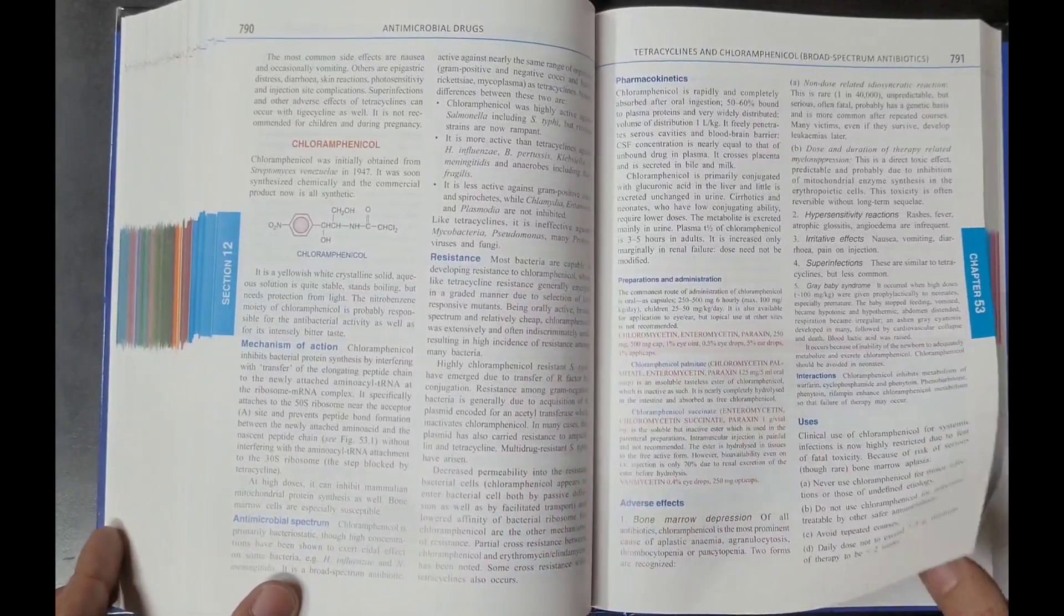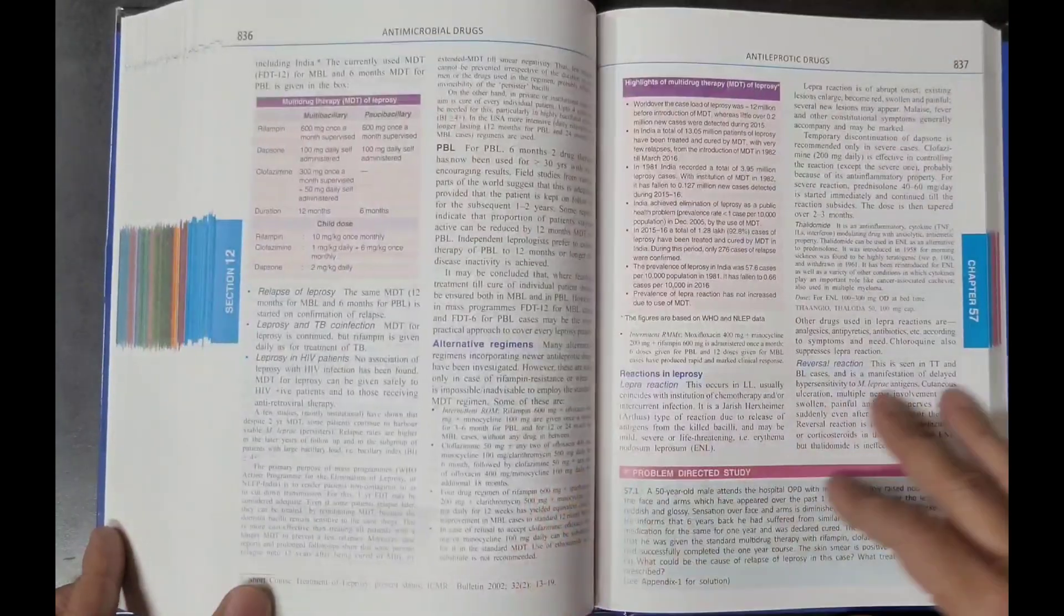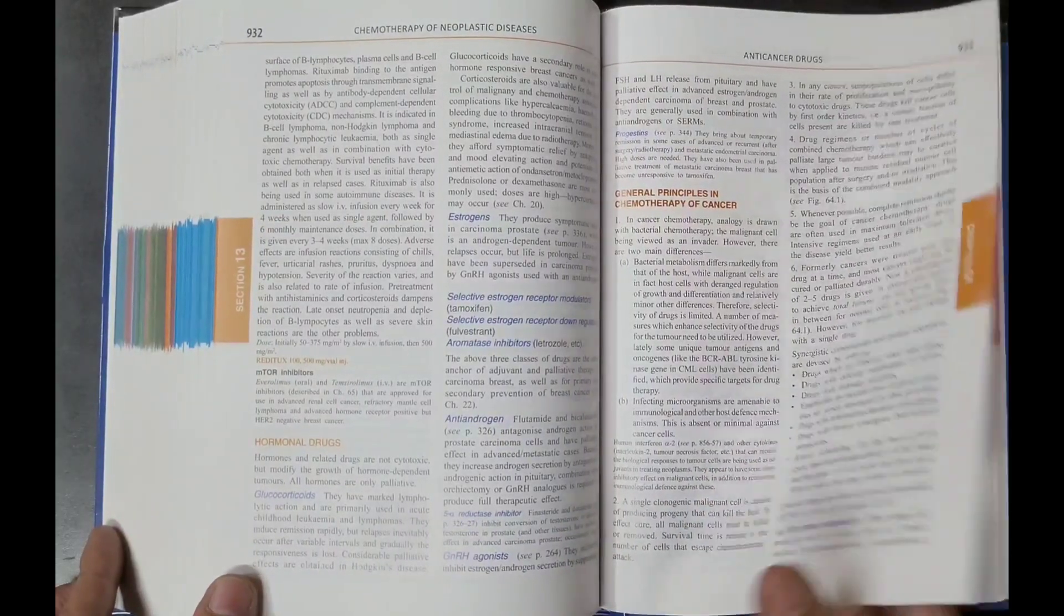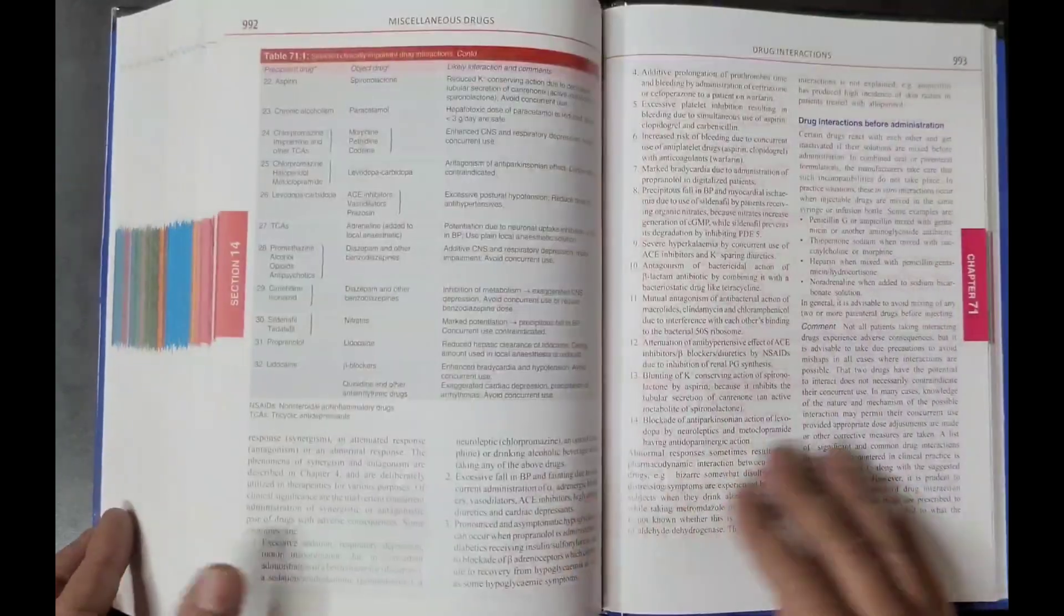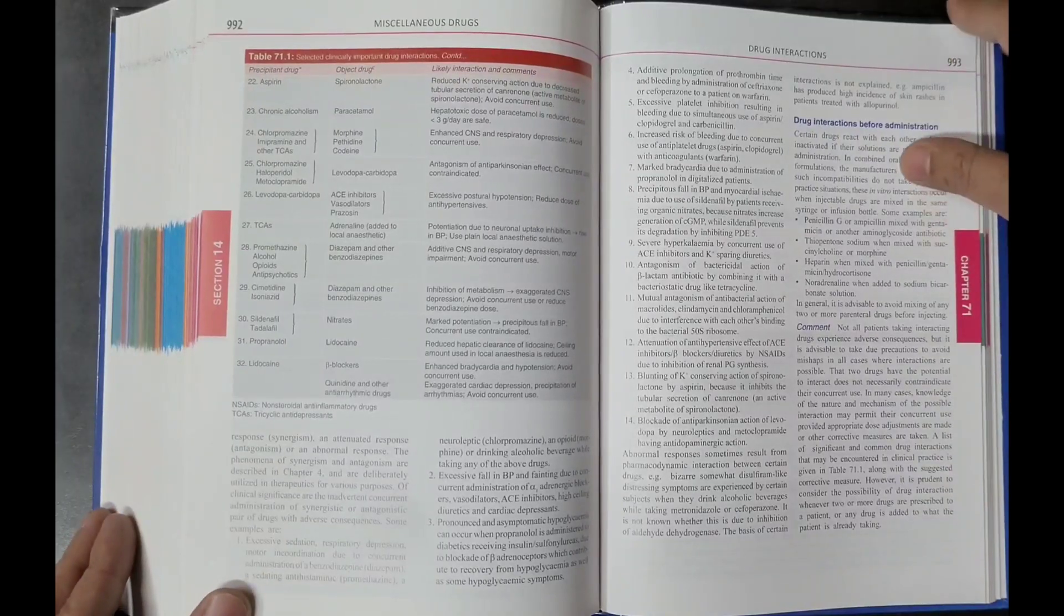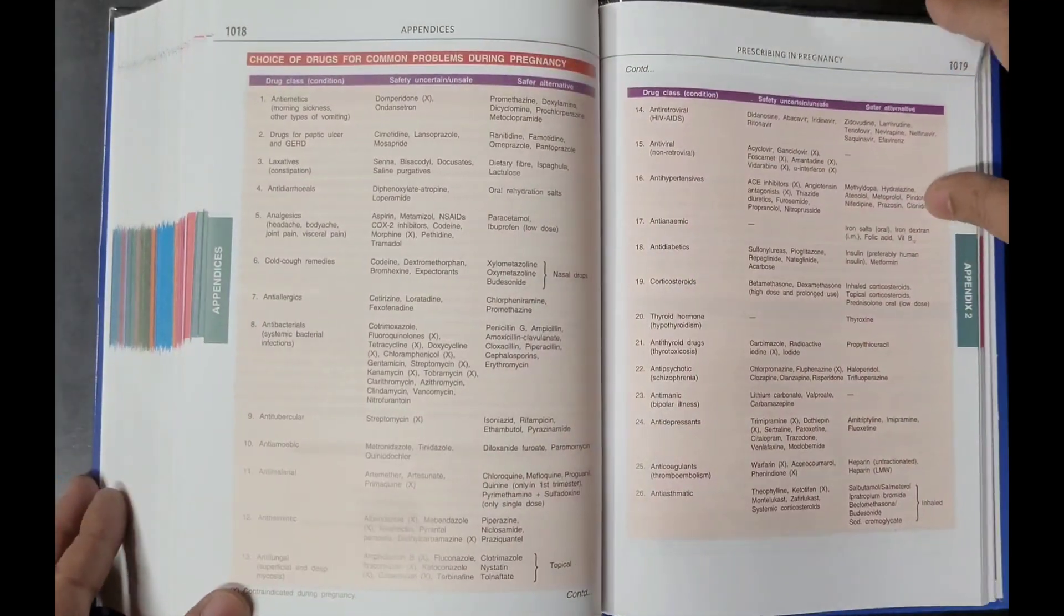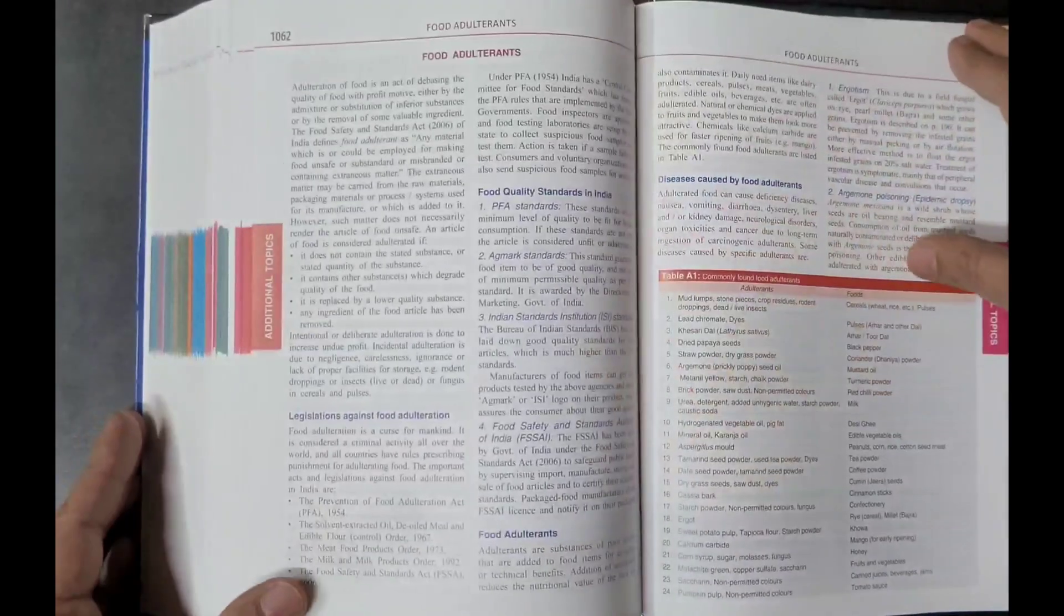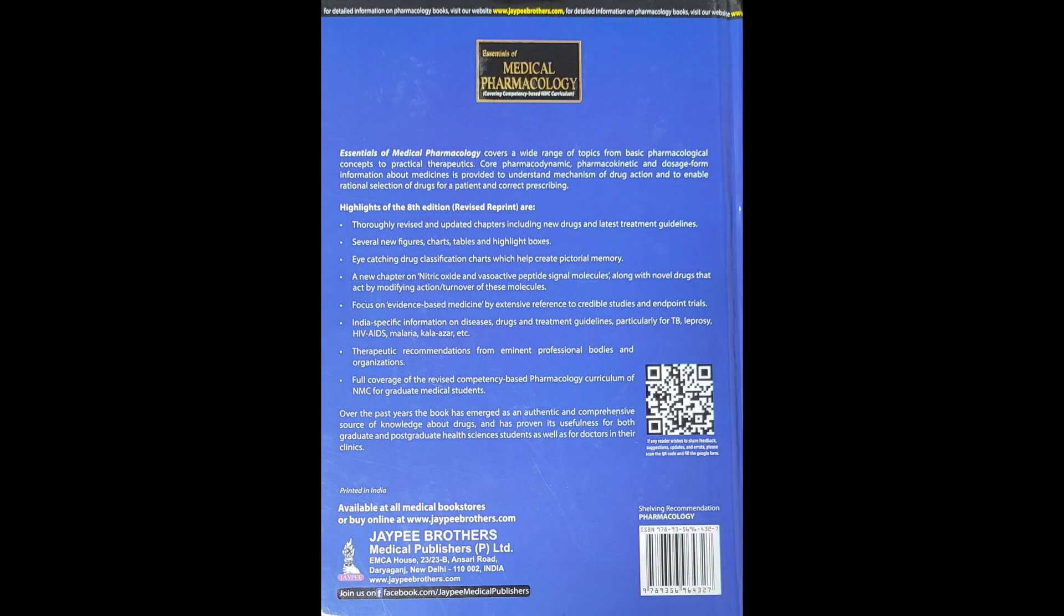You can buy original products from www.atithibooks.com. Atithibooks.com sells only original products. Delivery time 4-7 working days for all over India. Thanks for watching.